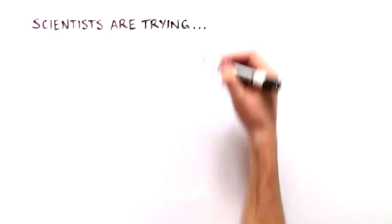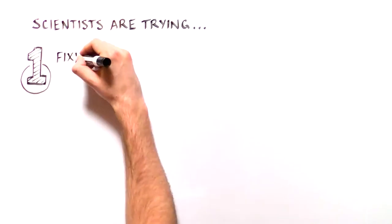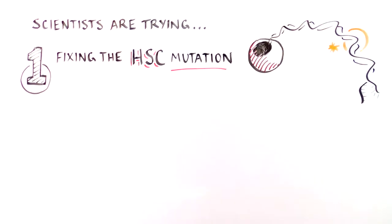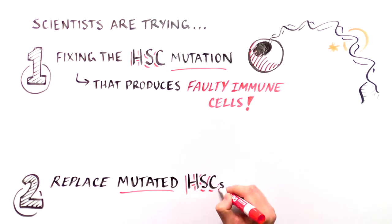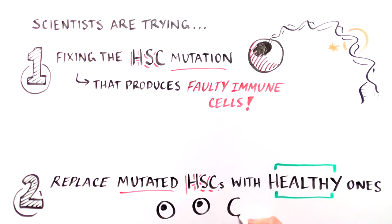Scientists are trying several complementary approaches. One, fixing the gene mutation in the HSC, and two, getting rid of all of the mutated HSCs and replacing them with normal ones.